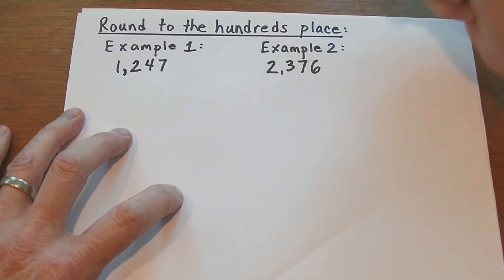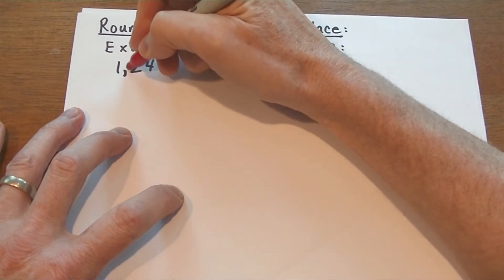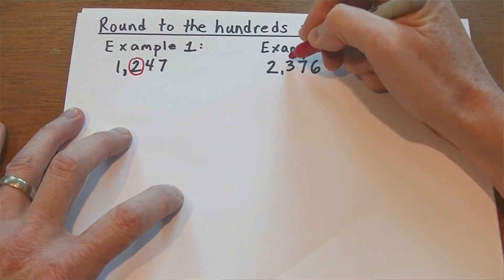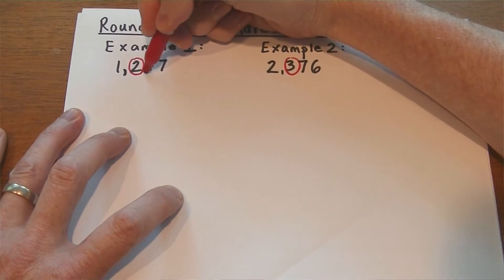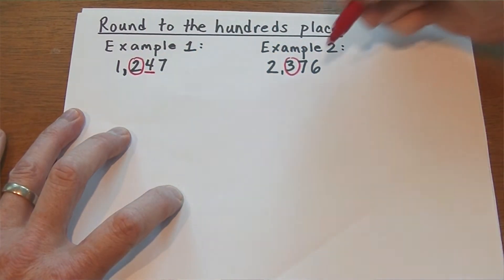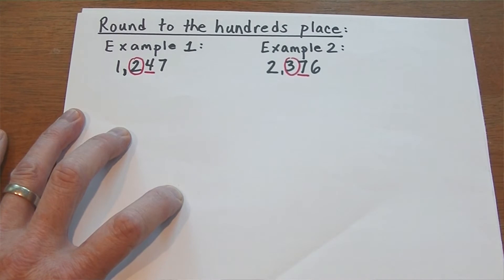Find the place we're rounding to and circle it right away. Will we round that number up or will it stay the same? Underline the next one on the right because that's your clue. That's the one that's gonna tell you what you have to do.